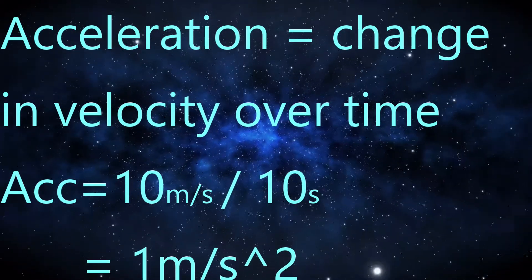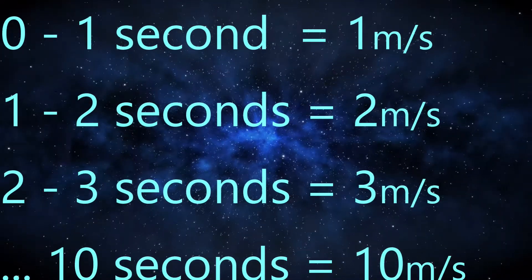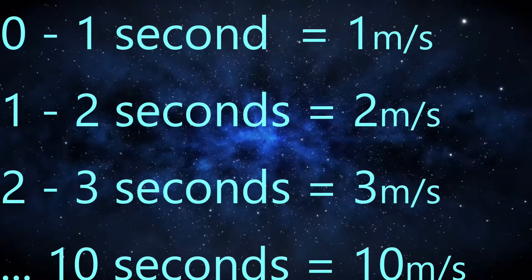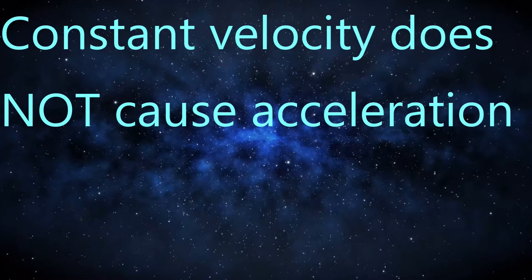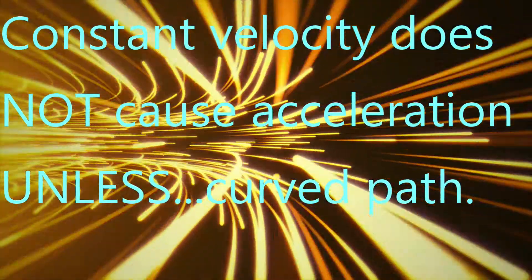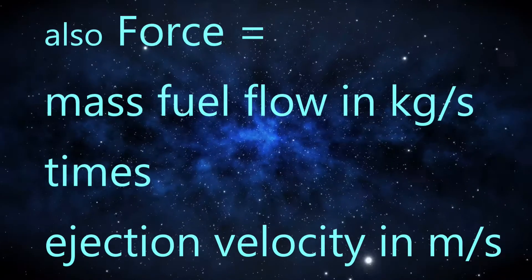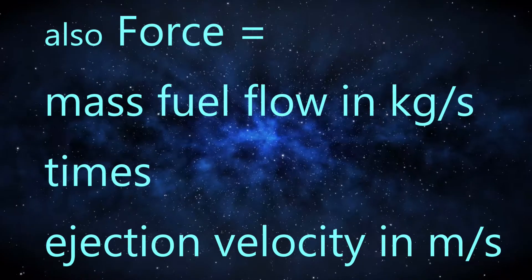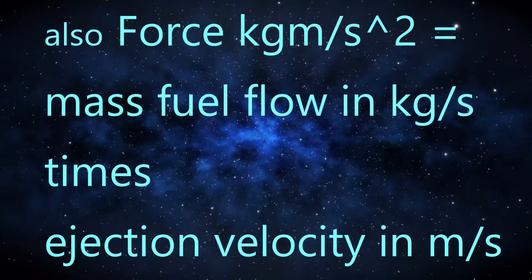This means that after the first second of acceleration you are moving at one meter per second; after the second second, two meters per second; at the end of the third second, three meters per second; and finally at the end of ten seconds you are moving at ten meters per second. Always remember that a constant velocity does not create acceleration unless you are traveling in a curved path. Force can also be defined as mass fuel flow in kilograms per second times propellant exhaust velocity in meters per second. This gives kilograms per second times meters per second equaling kilogram meters per second squared — or newtons — the same as the first equation.